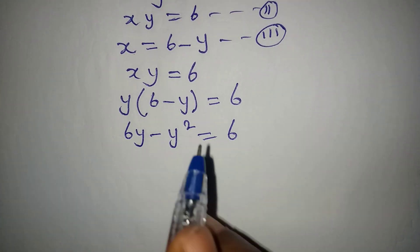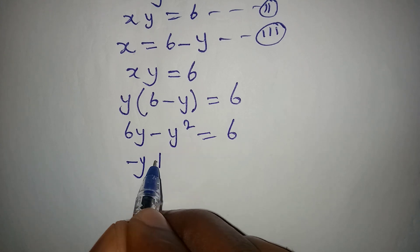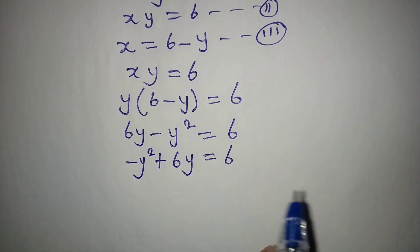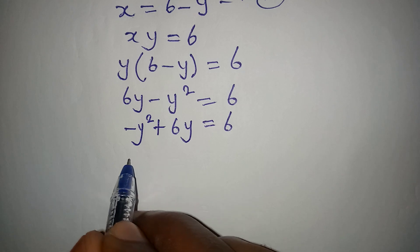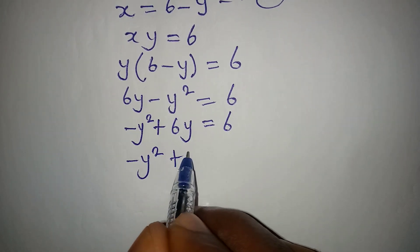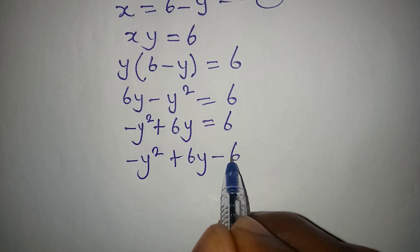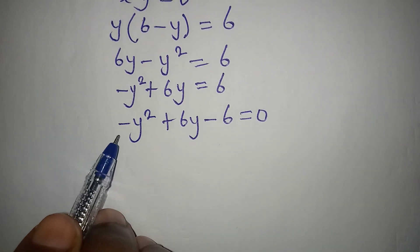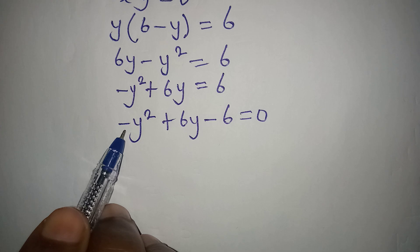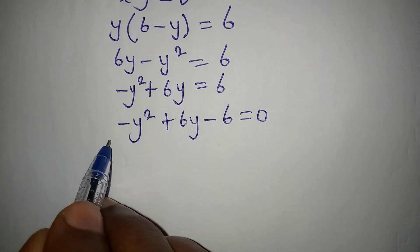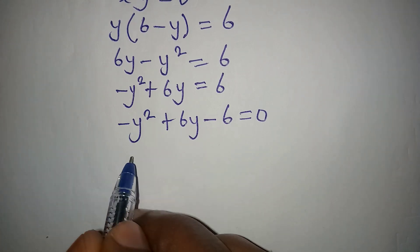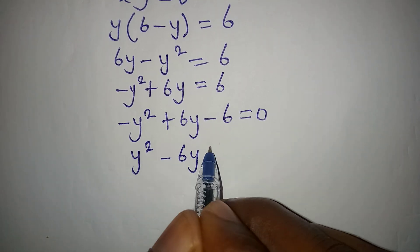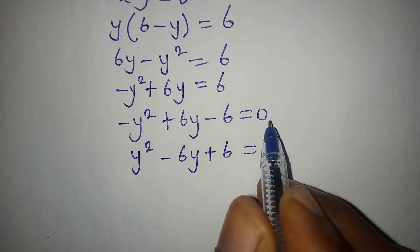We can rearrange this to get minus y squared plus 6y minus 6 equals 0. This is a quadratic equation, and we wouldn't want it to start with a negative sign, so we multiply everything by negative 1. This gives positive y squared, minus 6y, plus 6, equals 0.